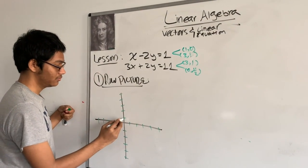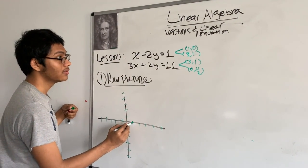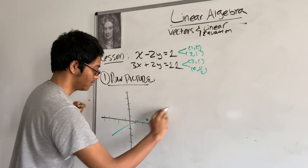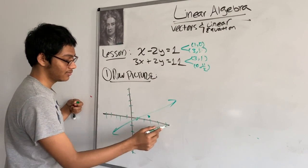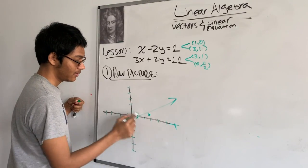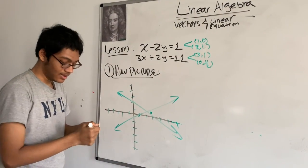So 0, 1, what is it? 1, 0, 3, 1. So here we go. 3, 1, and somewhere here 5.